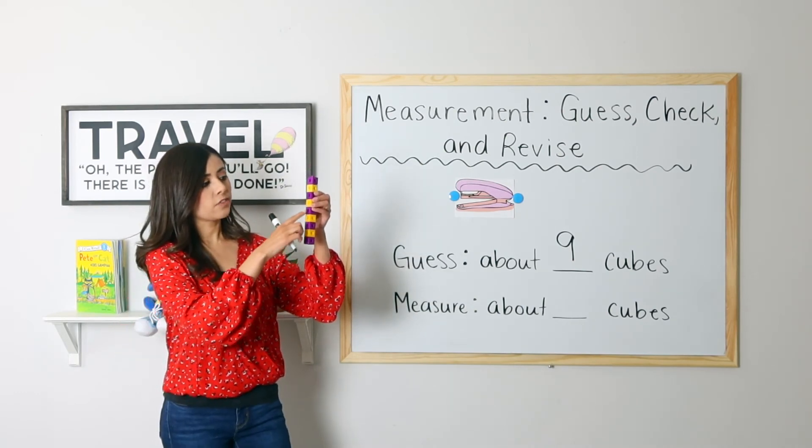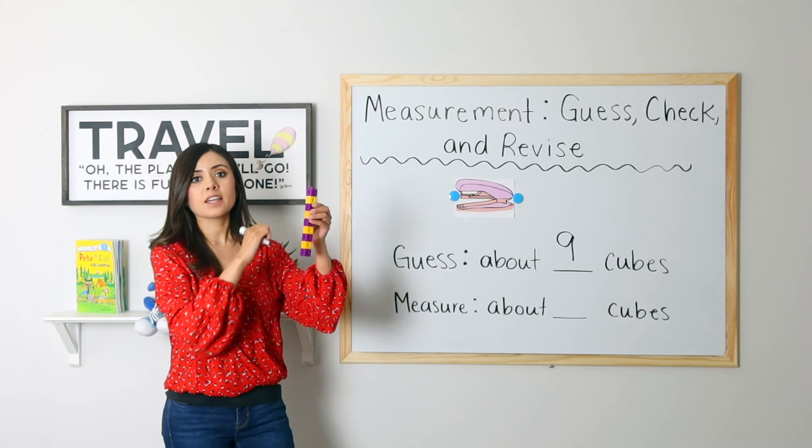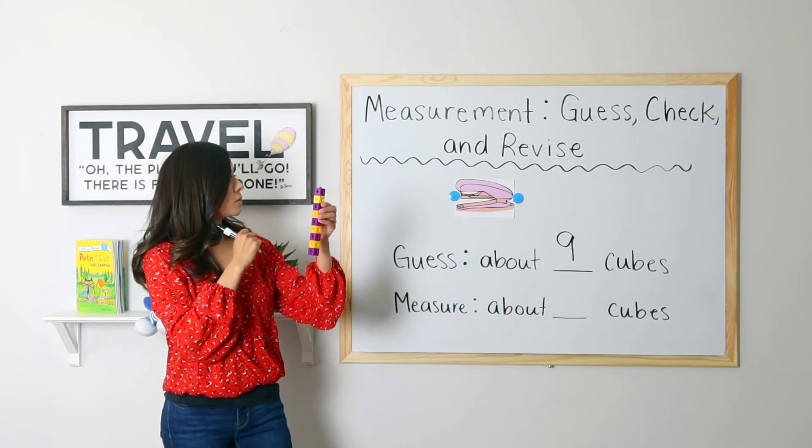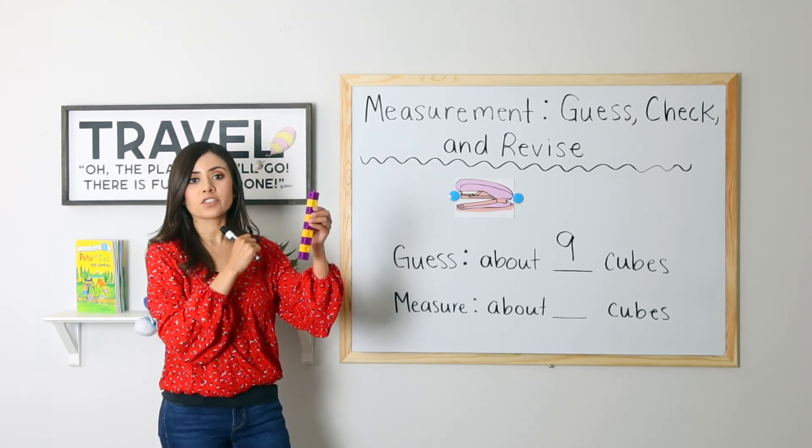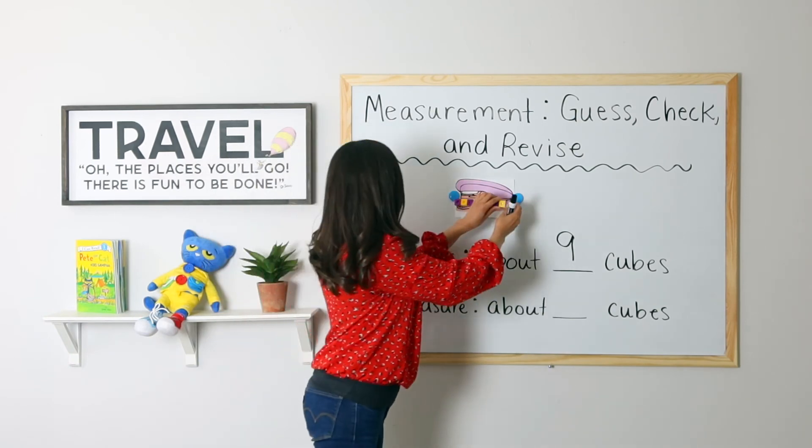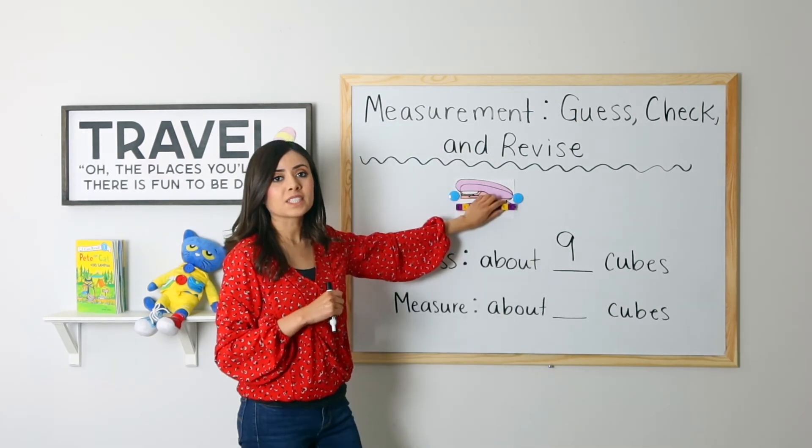So here I have nine cubes. One, two, three, four, five, six, seven, eight, nine. Let's go ahead and connect them to the stapler to see if it is correct. So because it is correct, I do not need to revise.